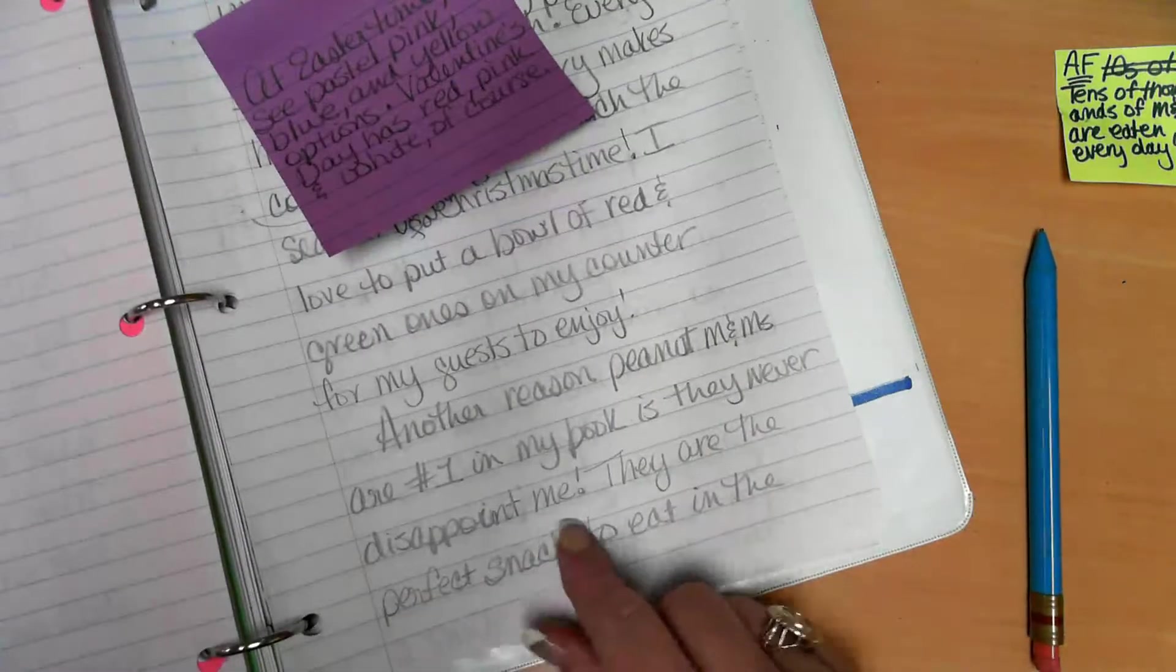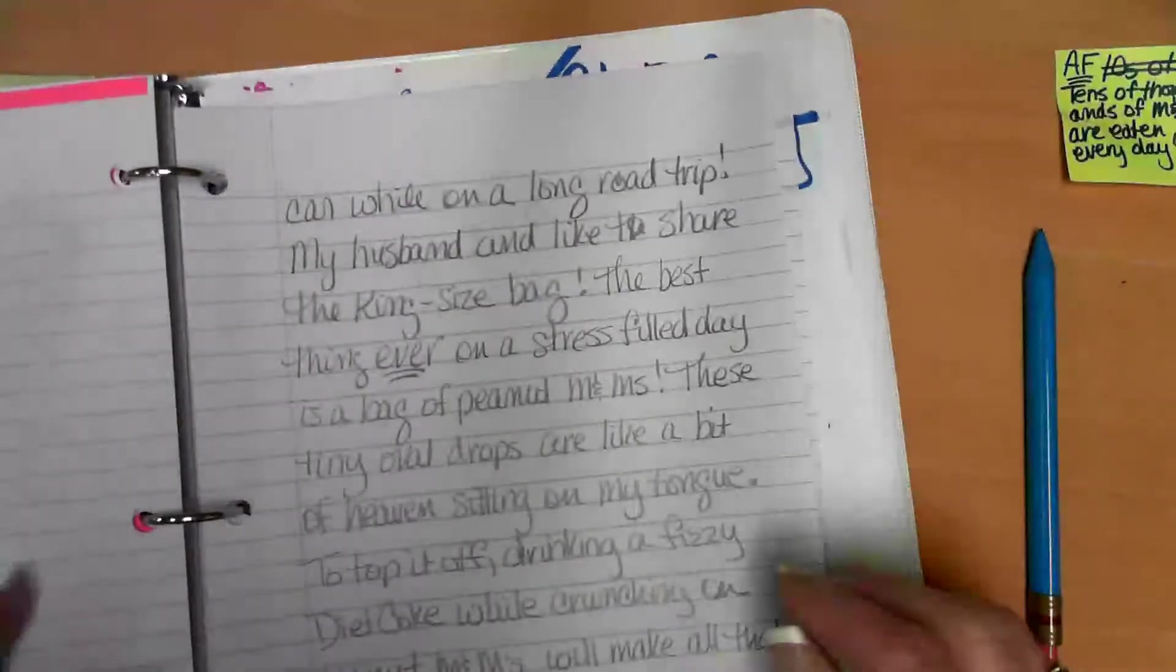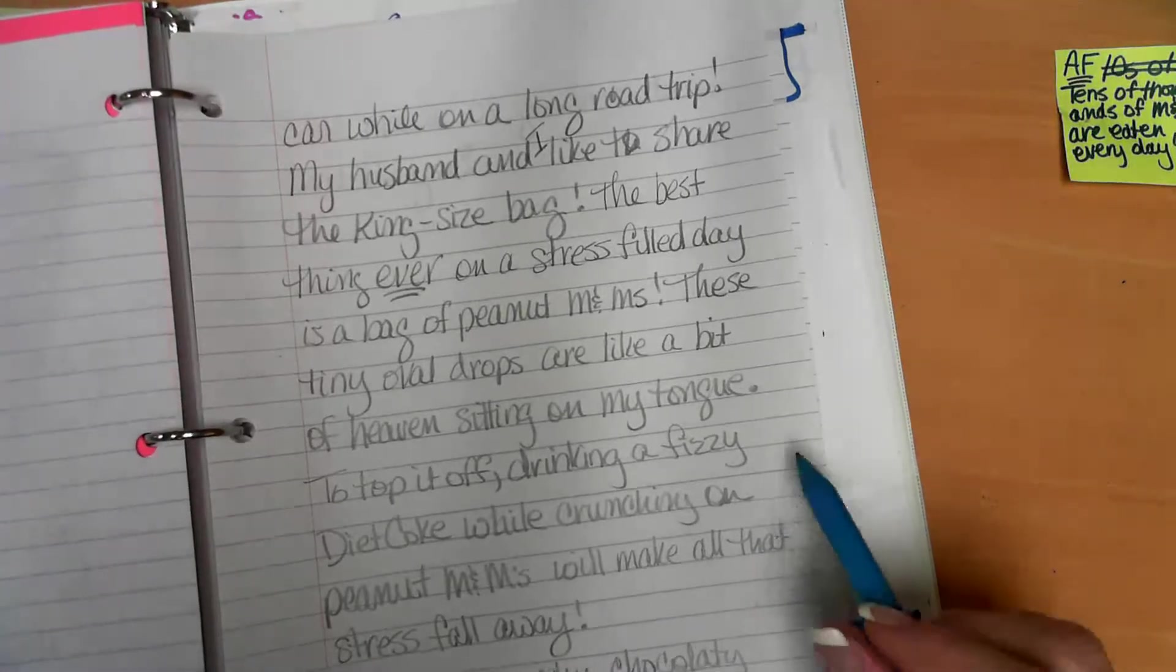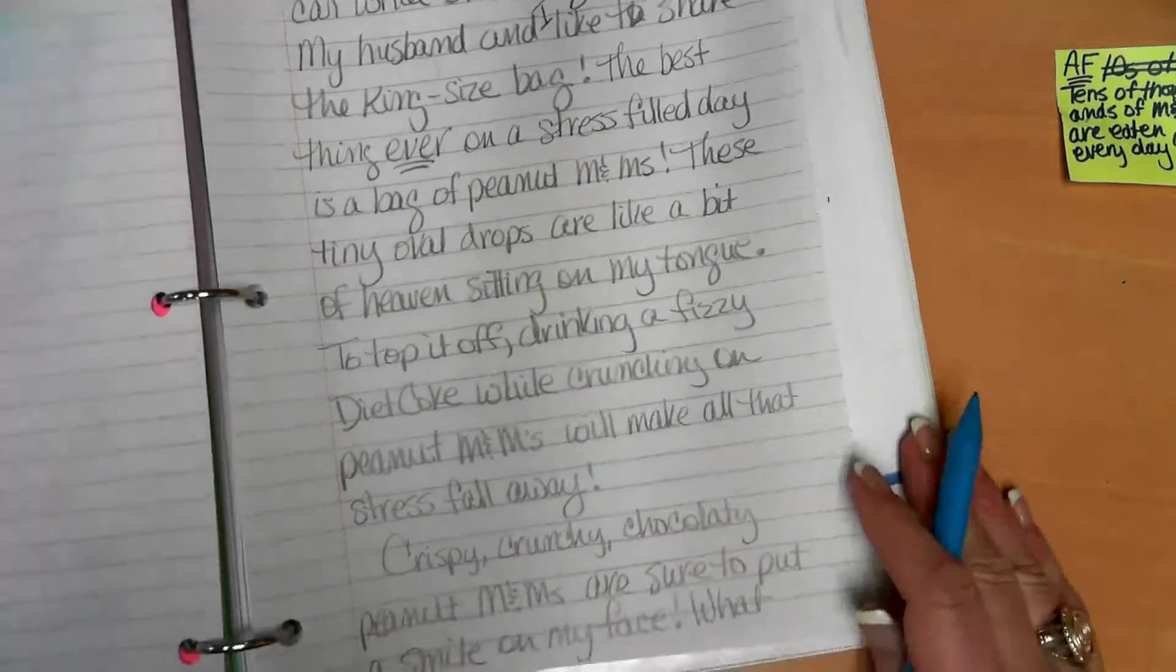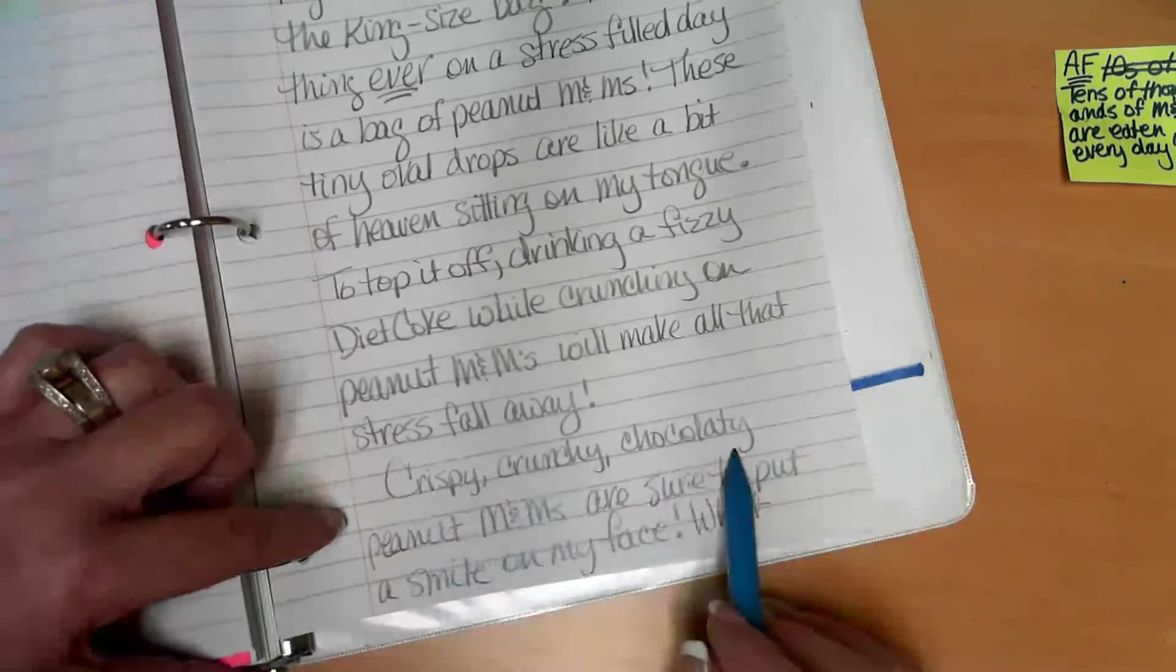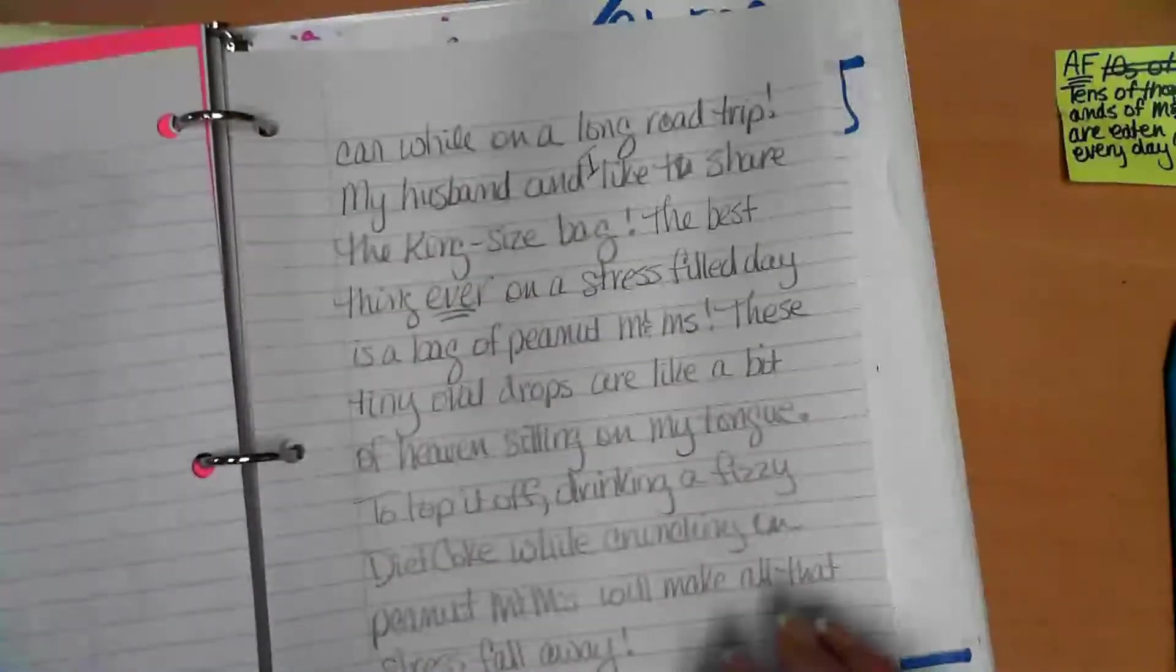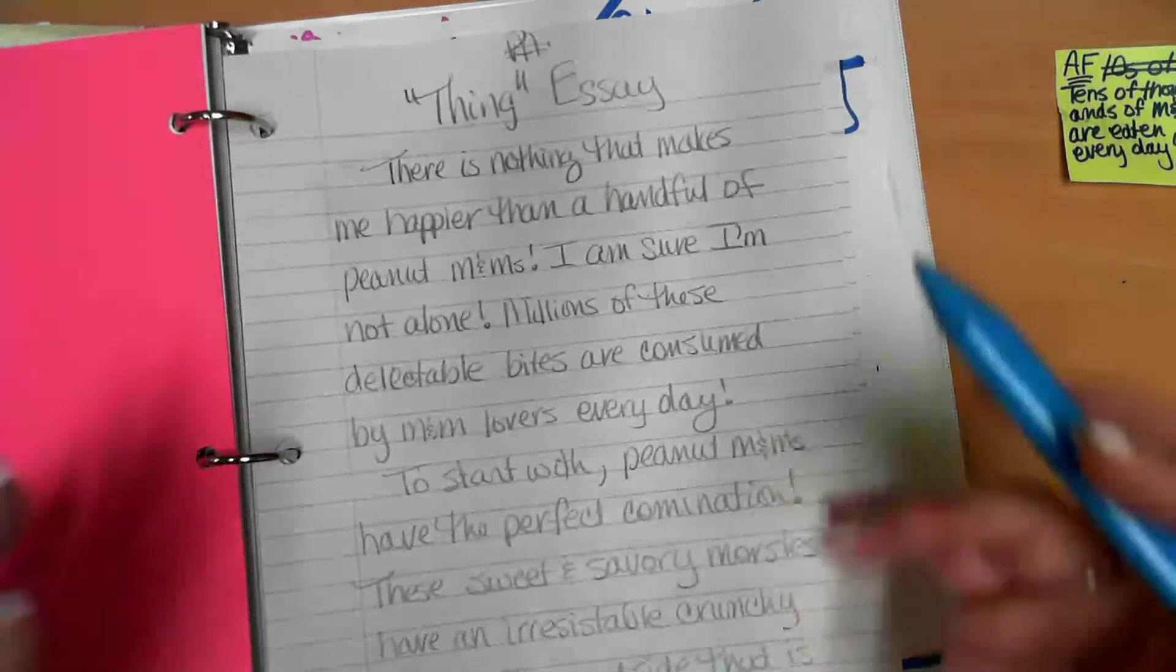Okay, so now it's time to read, think, write, read. It's time to read what I wrote. So I'm going to go here to this beginning of this paragraph. Another reason peanut M&Ms are number one in my book is they never disappoint me. They are the perfect snack to eat in the car while on a long road trip. My husband and I like to share the king-size bag. The best thing ever on a stress-filled day is a bag of peanut M&Ms. These tiny oval drops are like a bit of heaven sitting on my tongue. To top it off, drinking a fizzy Diet Coke while crunching on peanut M&Ms will make all that stress fall away. Crispy, crunchy, chocolatey peanut M&Ms are sure to put a smile on my face. What little morsel of goodness does that for you?